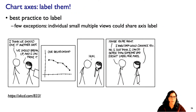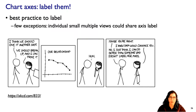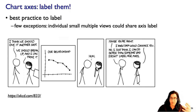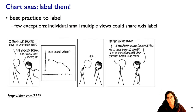An important best practice: label your axes. As XKCD points out, you need to label your axes if you want people to value you as a human being. There are a few exceptions — shared axis labels across aligned small multiples — but in general, best practice is to label your axes.